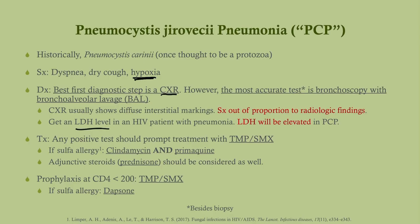Another thing you might see on a test question is that the LDH level is elevated — that is classic for PCP. Once you diagnose PCP, give trimethoprim-sulfamethoxazole (Bactrim) as standard treatment. However, if they have a sulfa allergy, give clindamycin and primaquine. Adjunctive steroids may be considered as well. We prophylax for PCP when the CD4 drops below 200, using the same medication — trimethoprim-sulfamethoxazole. If they have a sulfa allergy, give dapsone instead.